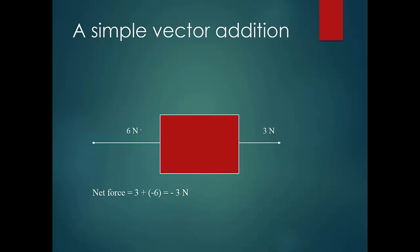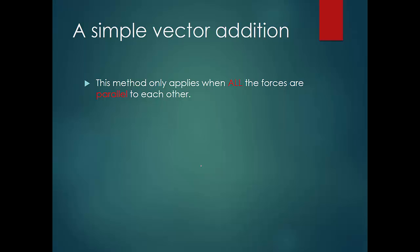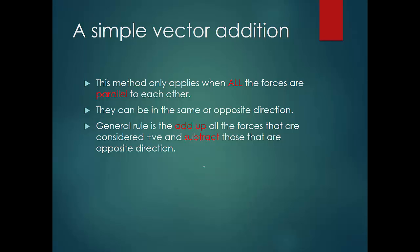Taking right as positive 3 Newton and left as negative 6 Newton, adding them gives negative 3 Newton — meaning 3 Newton towards the left. However, this method only works if all forces are parallel, meaning in the same or completely opposite directions. The general rule is to add all positive forces and subtract the negative ones.